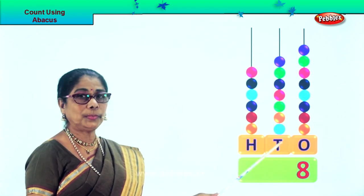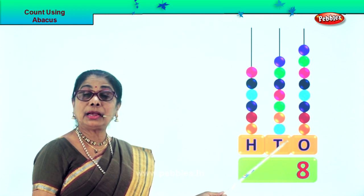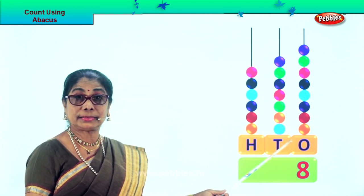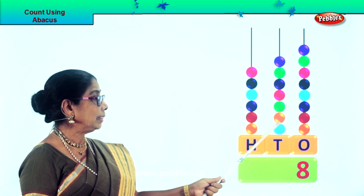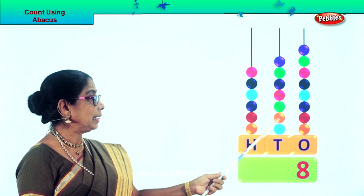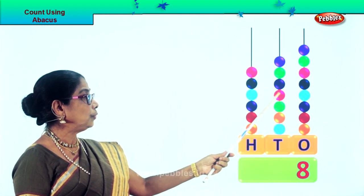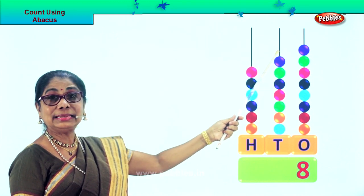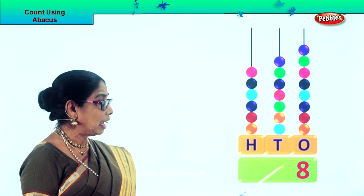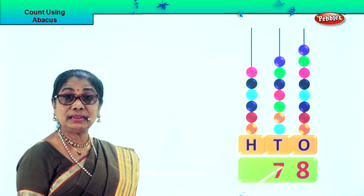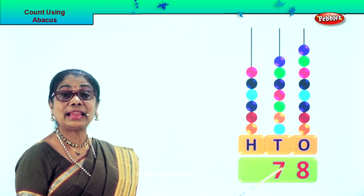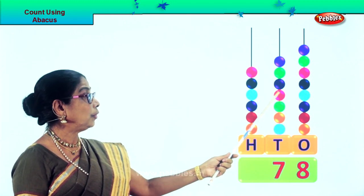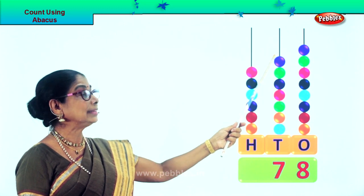Now we go to the 10s place. We'll count each bead in 10s: 1 ten, 2 tens, 3 tens, 4 tens, 5 tens, 6 tens, 7 tens. So we write down number 7 here — 7 tens, that is 70: 10, 20, 30, 40, 50, 60, 70.